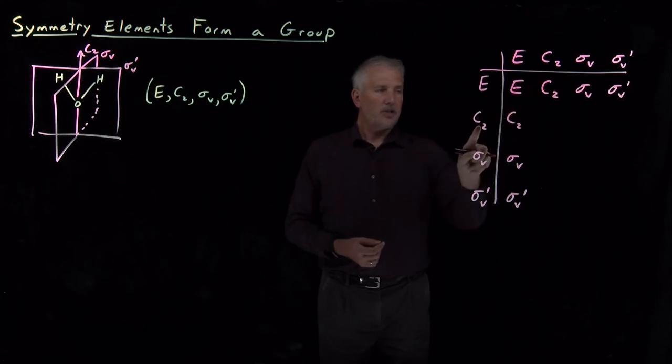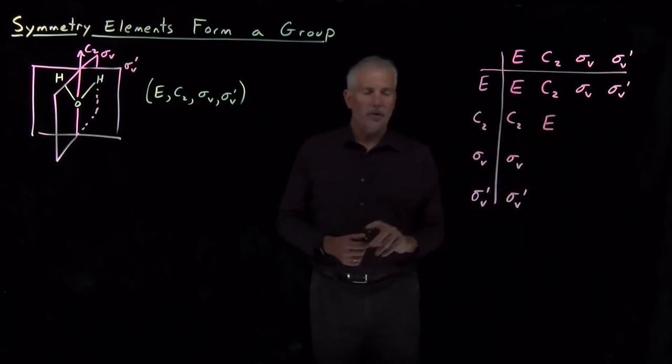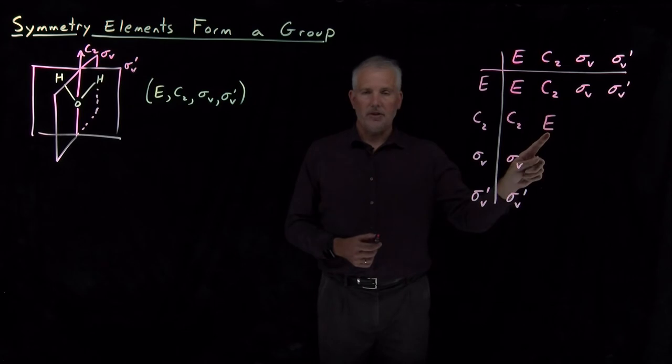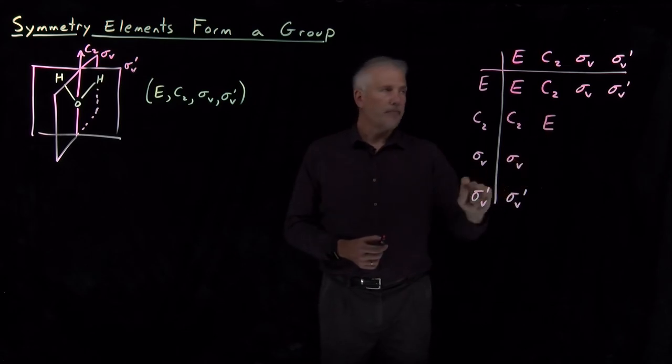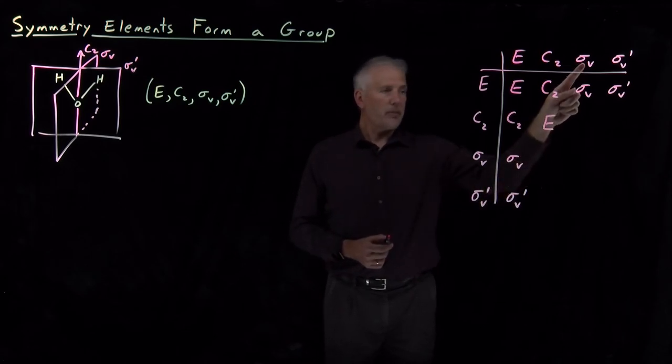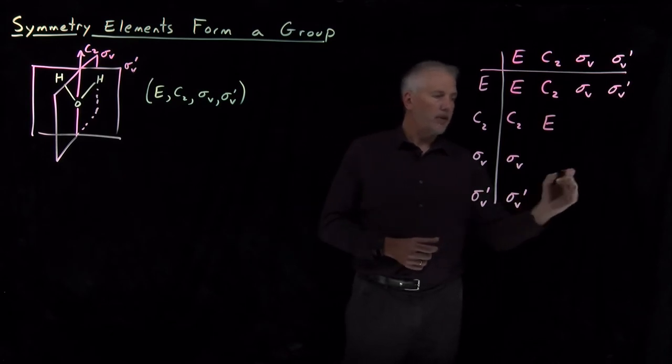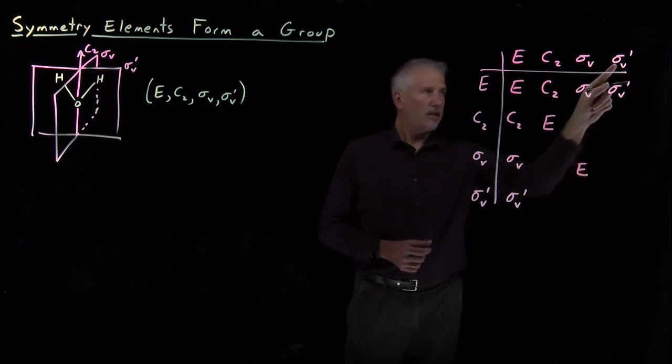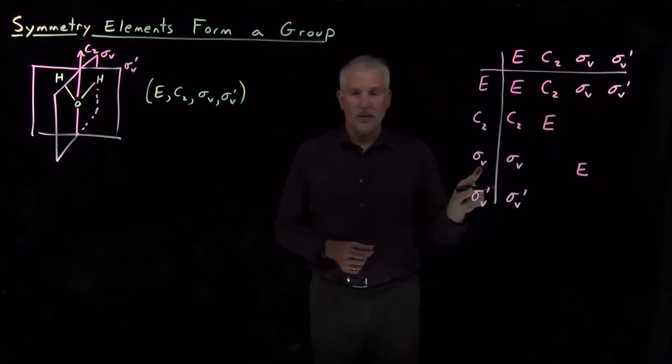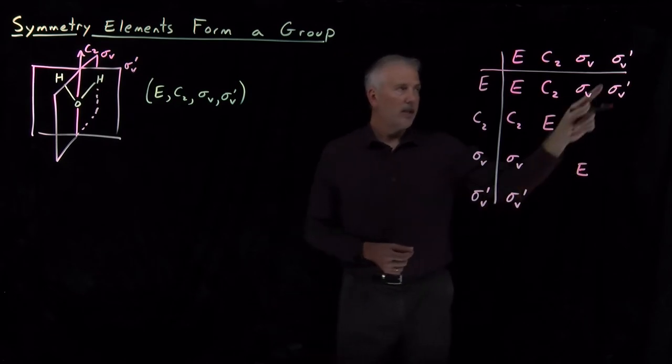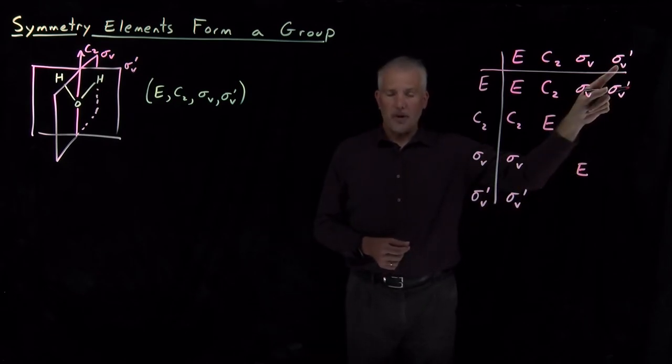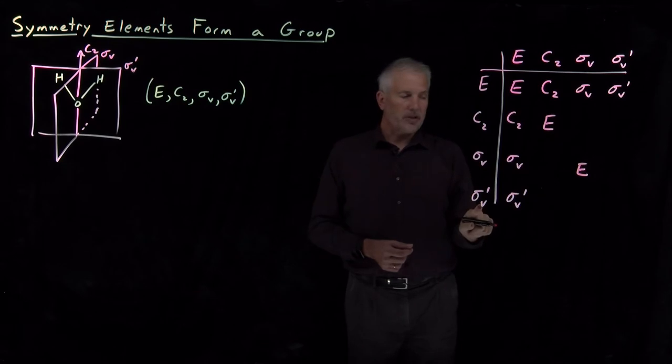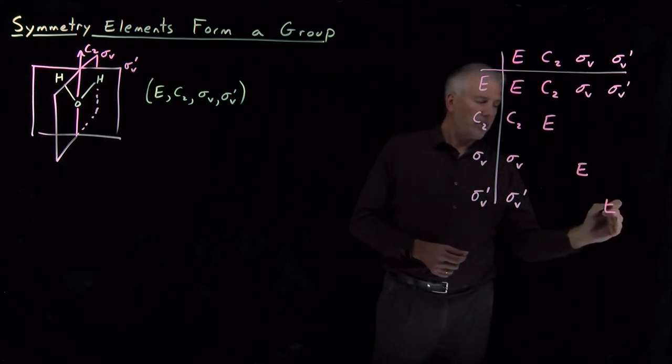Some of the other combinations are simple to do without doing any complicated 3D visualization. C2 and a C2, rotate halfway around, rotate the rest of the way around, gives us the same as if we had done nothing. Likewise, reflection planes. Sigma v followed by sigma v gives us the identity. Reflection through the sigma v prime plane followed by reflection through the same plane is the same as if we had done nothing.